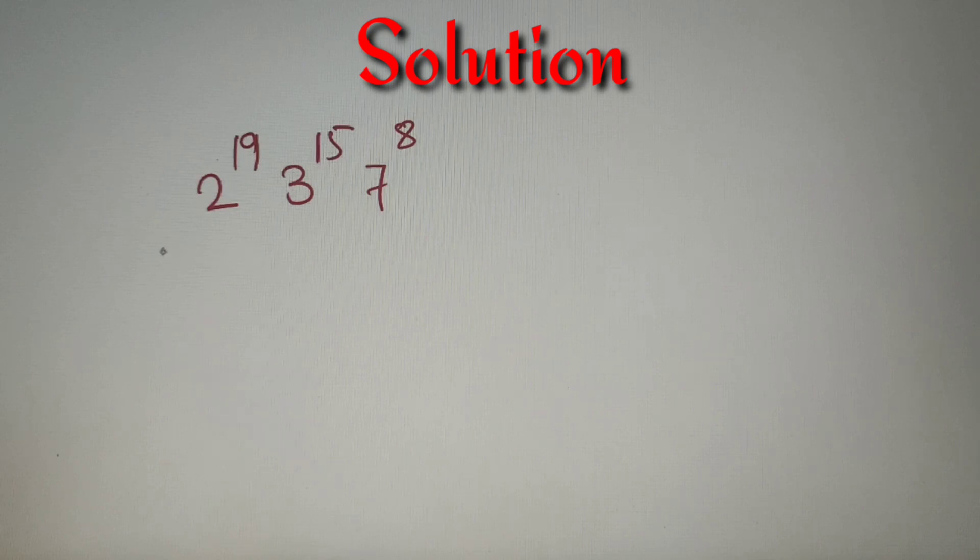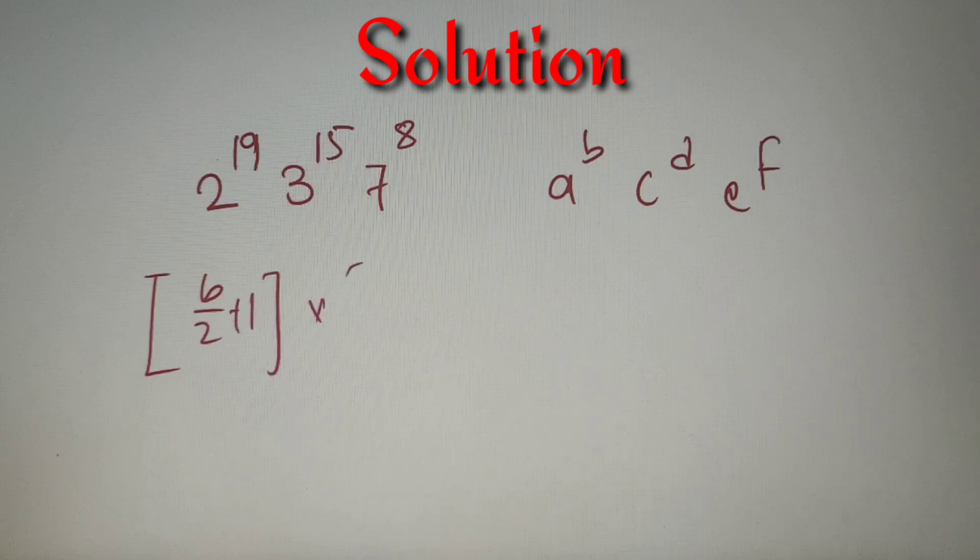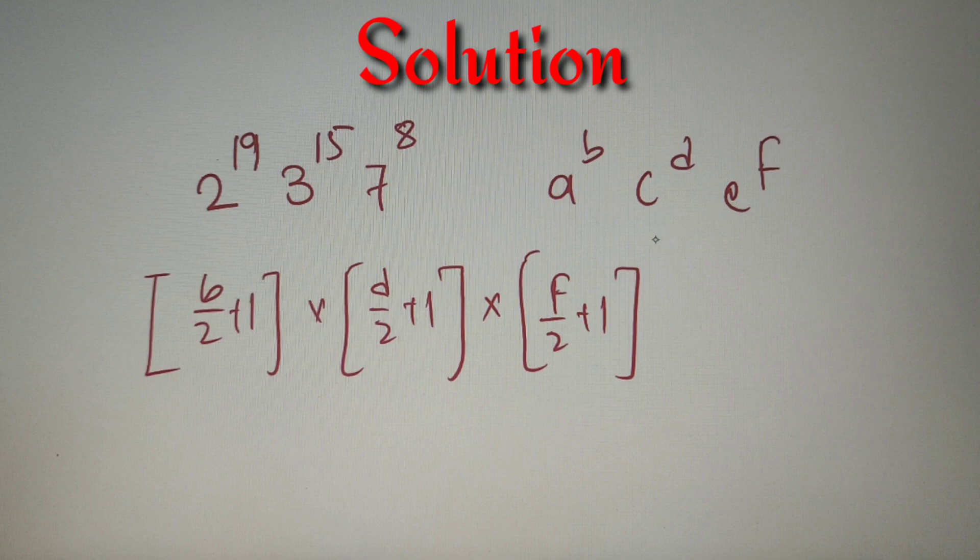So moving back to our question, now we have to find the number of perfect square factors and the formula is: if we have a number a raised power b into c raised power d into e raised power f, then the number of perfect square factors is equal to b by 2 plus 1 in the greatest integer function into d by 2 plus 1 in the greatest integer function into f by 2 plus 1 in the greatest integer function, where a, c, and e are prime numbers and b, d, f are their respective powers.